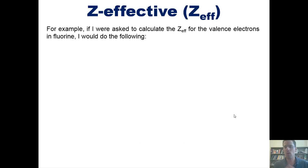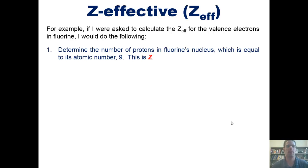For example, if I were asked to calculate the Z-eff for the valence electrons, which are the outermost electrons in fluorine, I would do the following. One, I would determine the number of protons in fluorine's nucleus, which is always equal to its atomic number, in this case, 9. That number happens to be Z from the equation I just showed you in the previous slide.